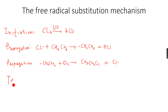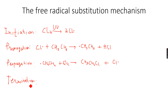The last step is known as the termination step. In the termination step, two free radicals combine to form a product. This can have multiple combinations — for example, two chlorine free radicals can combine.